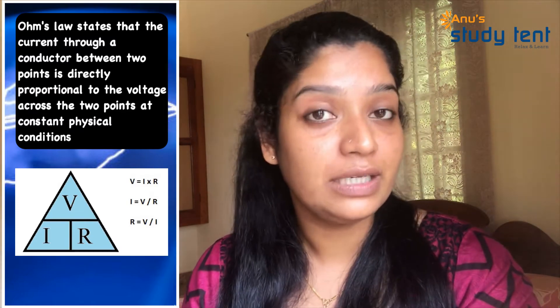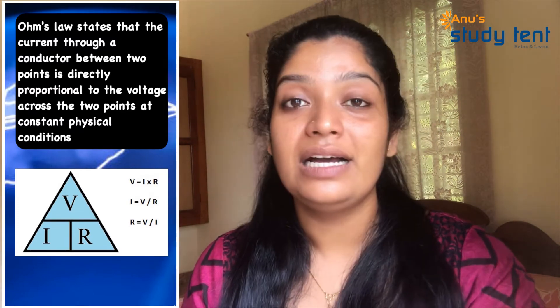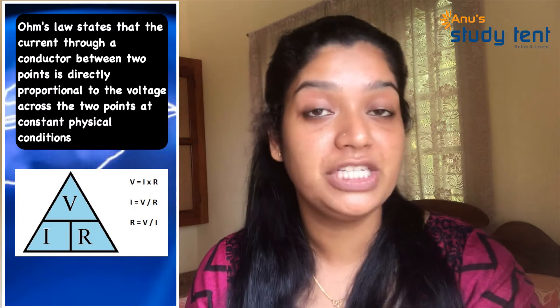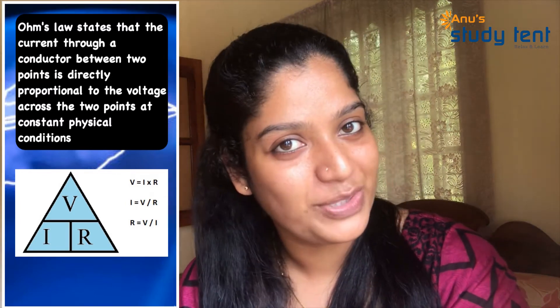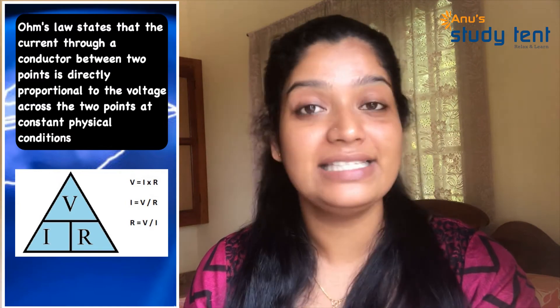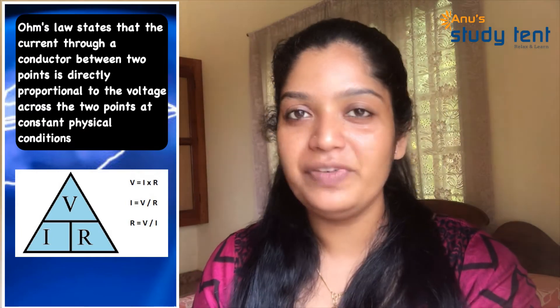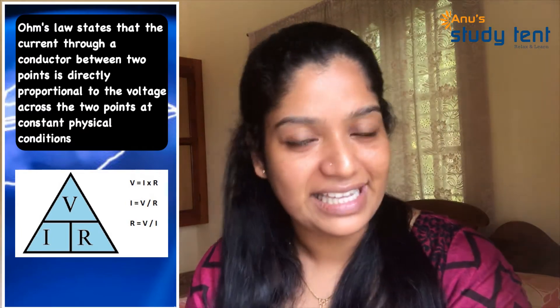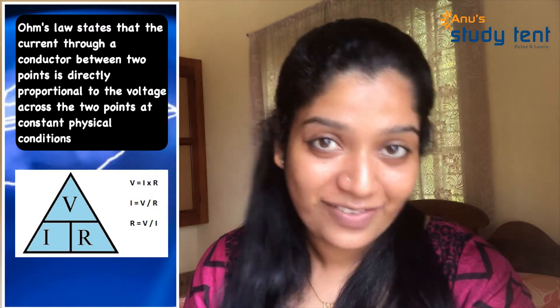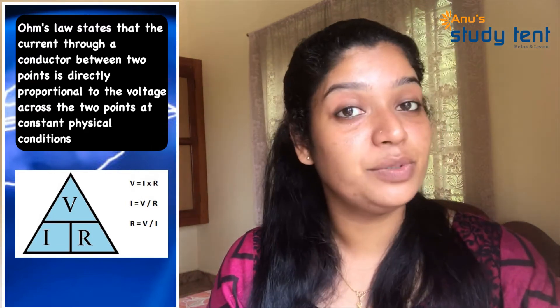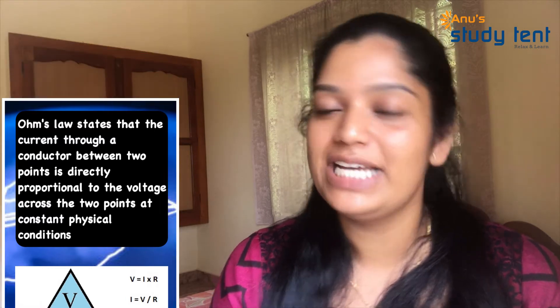Ohm's Law. What is Ohm's Law? V is equal to IR. The electrical potential difference is directly proportional to the current flowing through the conductor, provided physical conditions such as temperature remain constant. The proportionality constant is resistance. V is equal to IR, so R is equal to V divided by I. The SI unit of resistance is the ohm. 1 ohm is equal to 1 volt per 1 ampere.